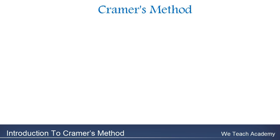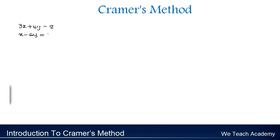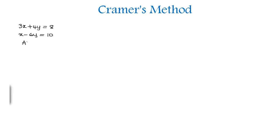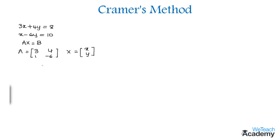Hello guys, welcome back. In this video we are going to learn how to find solutions of a system of linear equations using Cramer's method. Let us consider two equations and express them in matrix equation form, which is Ax = b. The coefficient matrix A is equal to [3, 4; 1, -6], the variable matrix x is equal to [x; y], and the constant matrix b is equal to [8; 10].